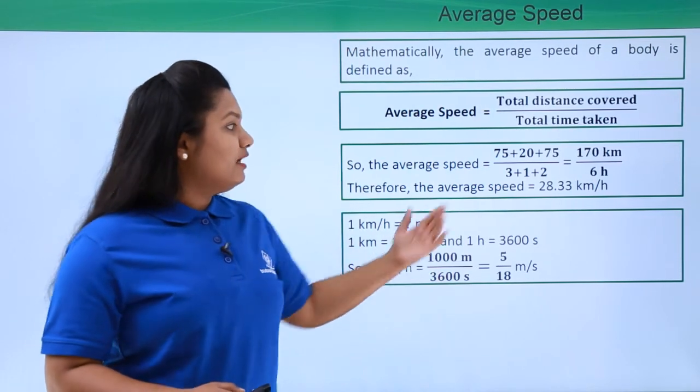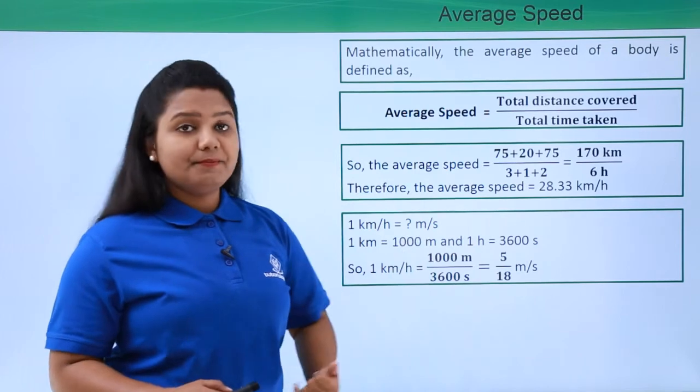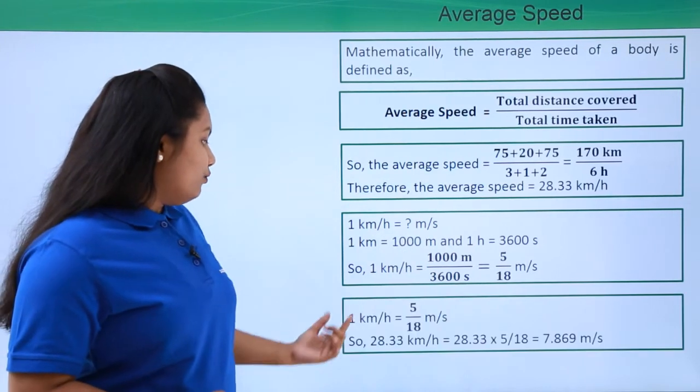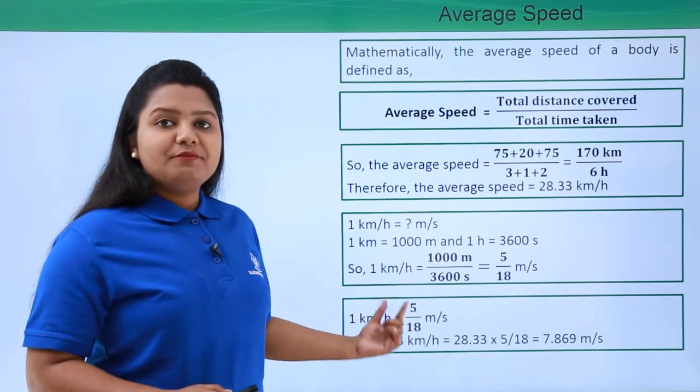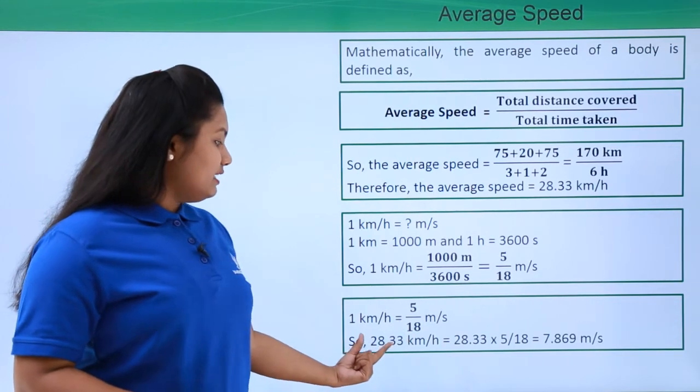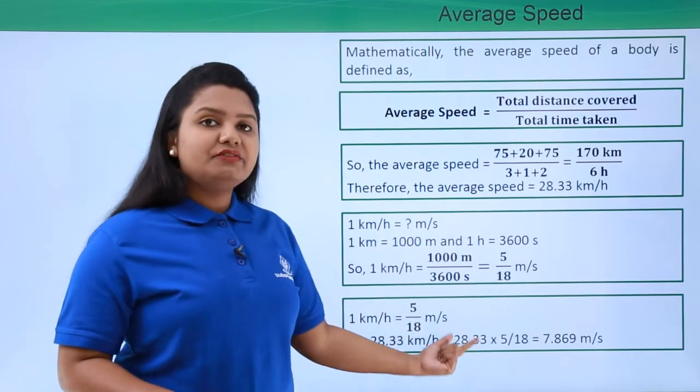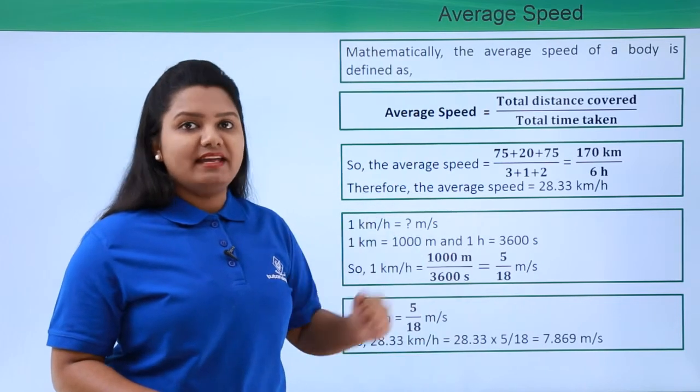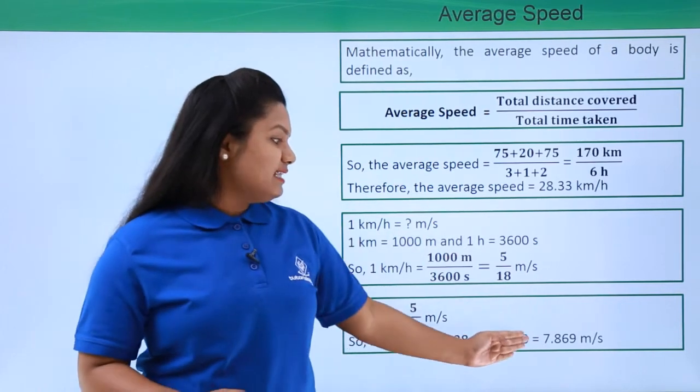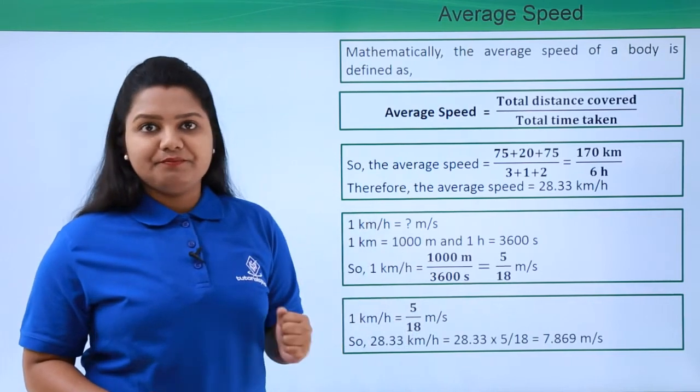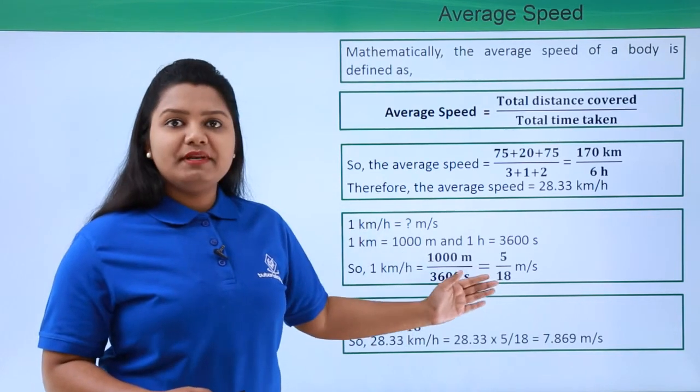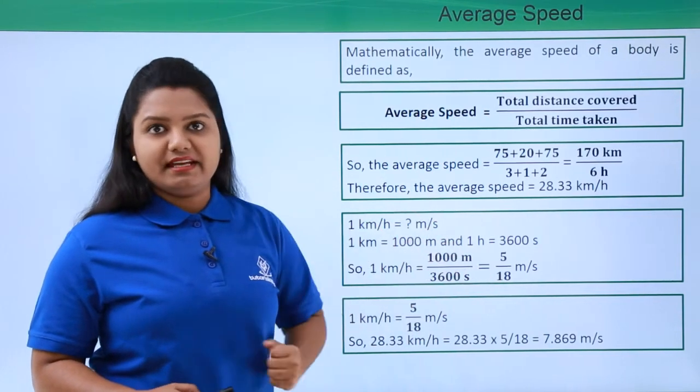Now let's apply this formula to this speed over here. So 1 kilometer per hour equals 5 by 18 meters per second. So 28.33 kilometers per hour will be equal to 28.33 multiplied by 5 by 18, which equals 7.869 meters per second. And this is the average speed of the car in meters per second.